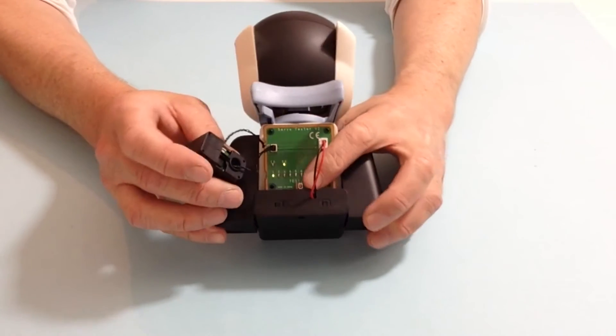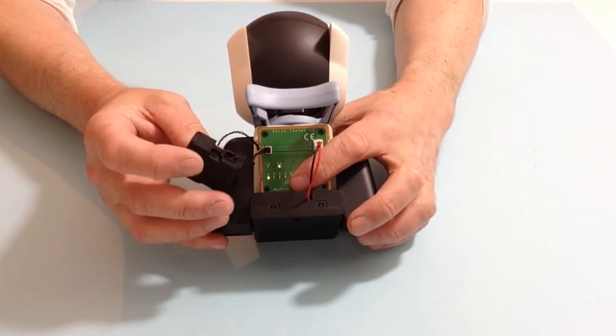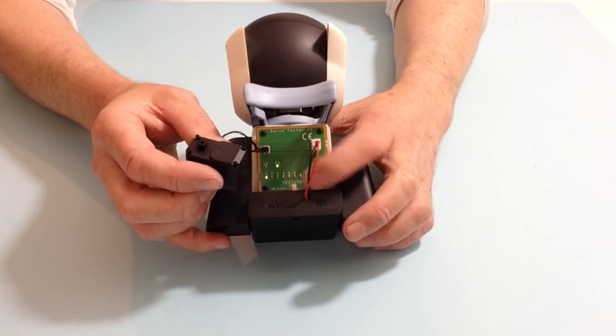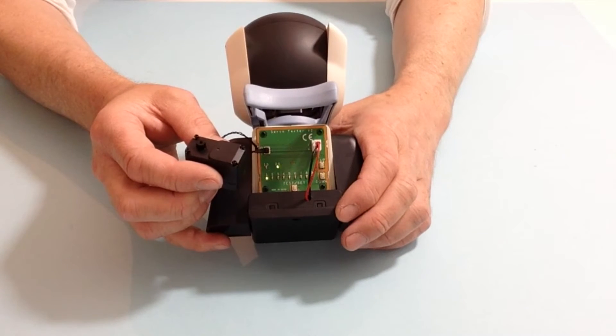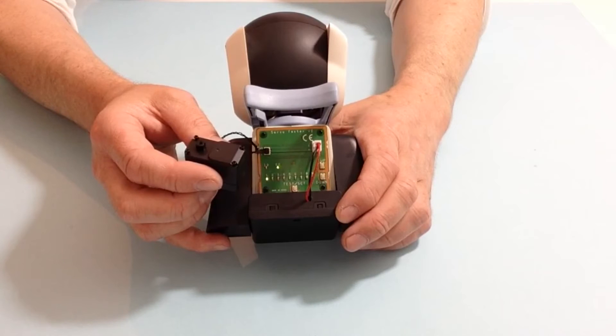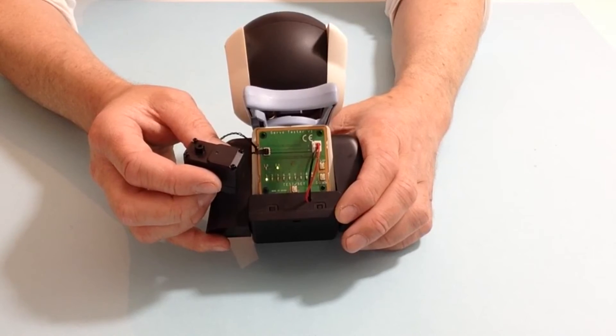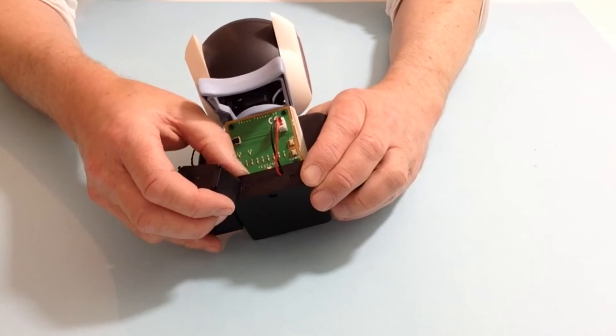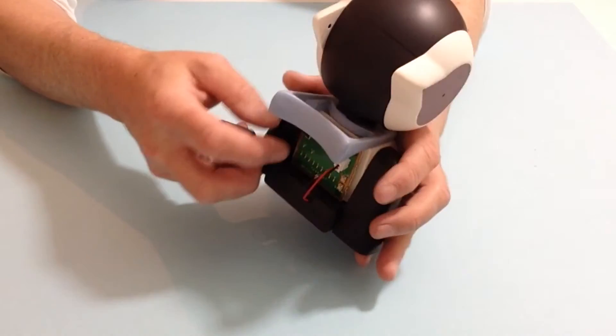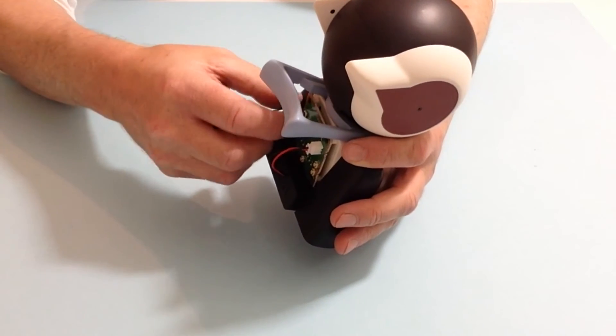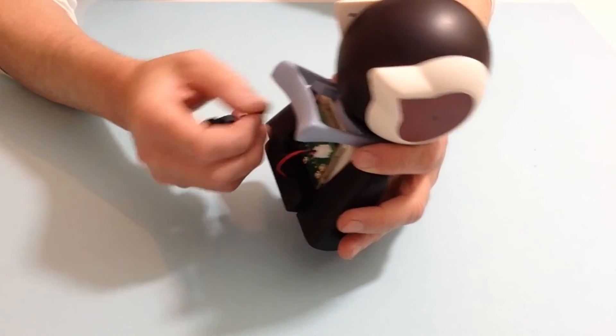Once that's done, press the test button and the servo should rotate 45 degrees to one side, 45 degrees to the other, and then back to the center. Once you've done that, turn off the test and then gently remove the cable.